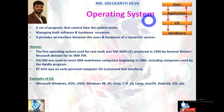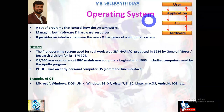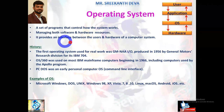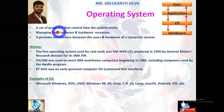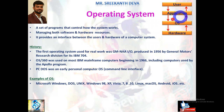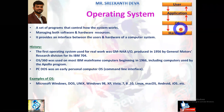The operating system is the most important program that runs on a computer. It is considered the backbone of a computer, managing both software and hardware resources. End users who interact with the machines communicate with hardware components through system software called the operating system. The operating system enables several internal functionalities like process management, memory management, input/output management, and file management.